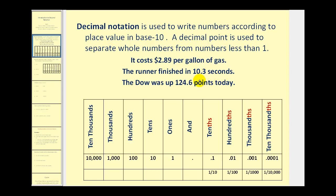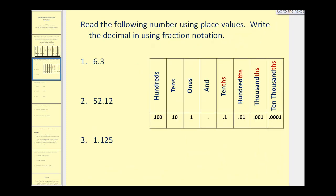Since the digits to the right of the decimal represent a number less than one, we can also represent decimals as fractions. Let's go ahead and take a look at that. We want to be able to read each of these numbers and then write them using fractional notation.